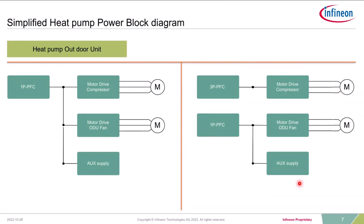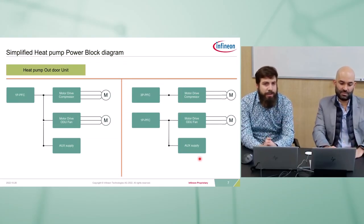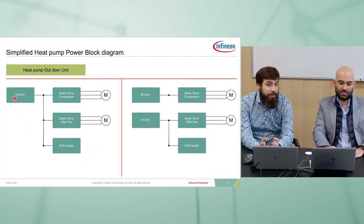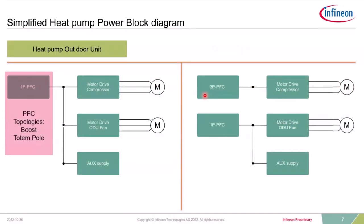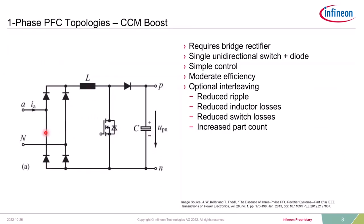Looking at a simplified block diagram of the outdoor unit of a heat pump, we see two conceptualizations. For different power levels, we're looking at a single-phase or three-phase solution. On the left, the single-phase solution with a single-phase PFC connected to the motor for the compressor, outer unit fan, and auxiliary supply. We start with the single-phase PFC. For the power levels we're looking at, we can't use passive PFC — we're looking at boost and totem pole. The simplest implementation is the CCM boost topology, using a bridge rectifier on the input, followed by an inductor and a unidirectional switch and diode.